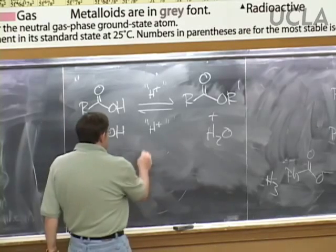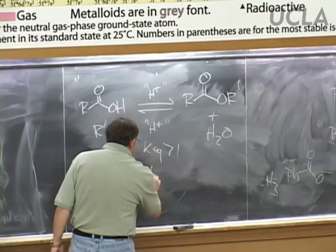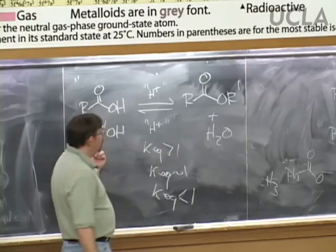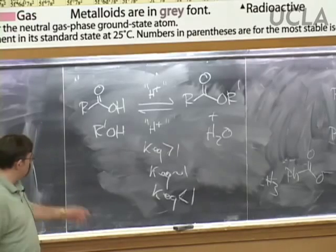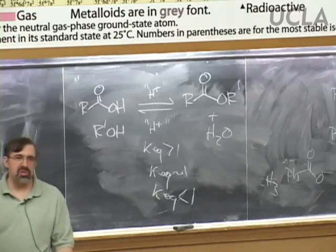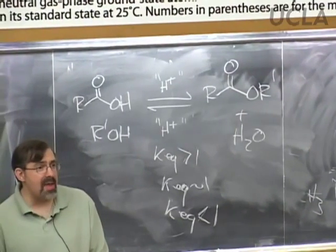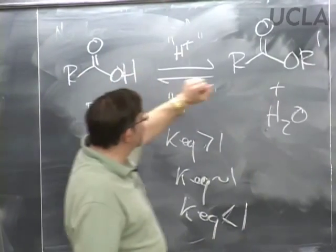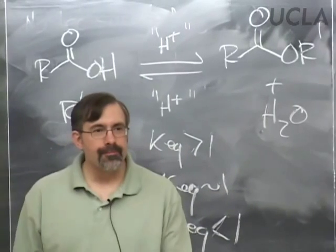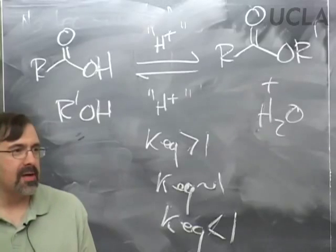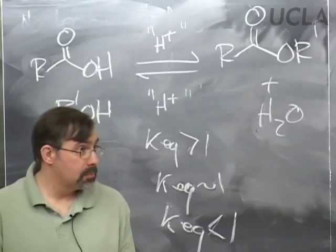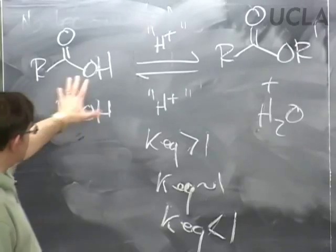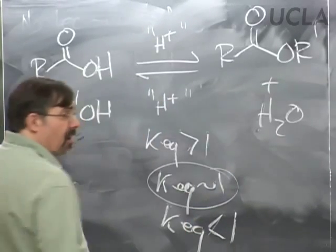The equilibrium is based upon stability, and the principal stability issue is resonance. There's no resonance in the alcohol or water, but there's resonance in a carboxylic acid and resonance in an ester. Which has more significant resonance? They're pretty much equal—they're both carbonyls with an oxygen next door, and the R group usually doesn't change the nature of that. So this equilibrium constant is very close to equal.